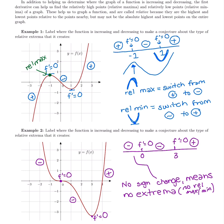At x equals three — the other place where the derivative is zero — it switches from decreasing to increasing. Drawing a little picture: decreasing to zero to increasing. Does that look like a relative max or min? Decreasing to increasing means it's a relative min.